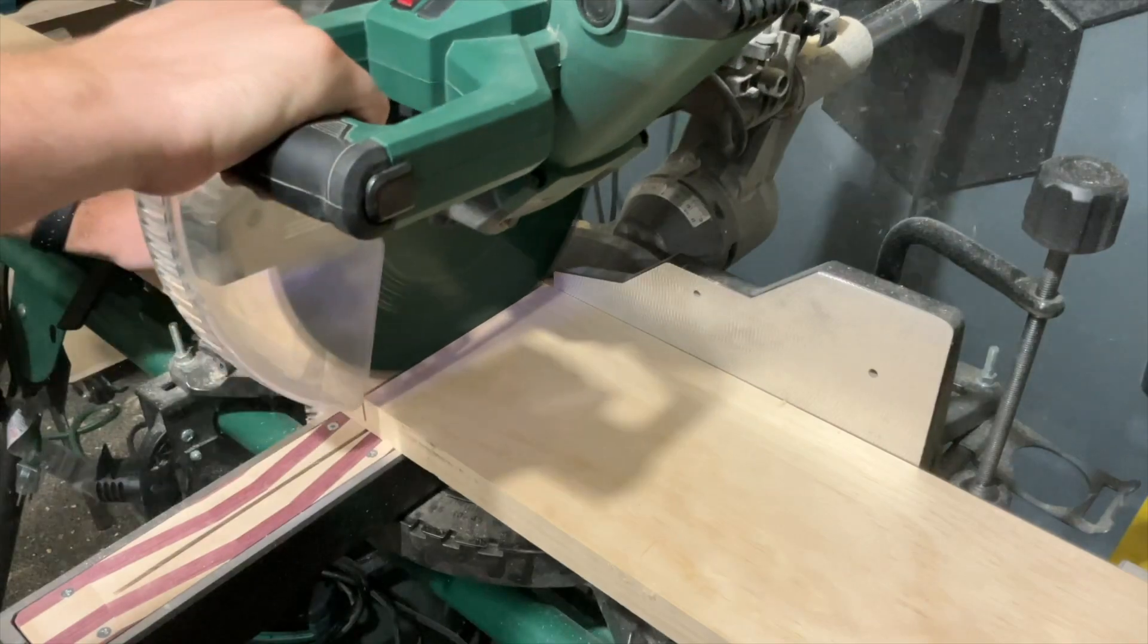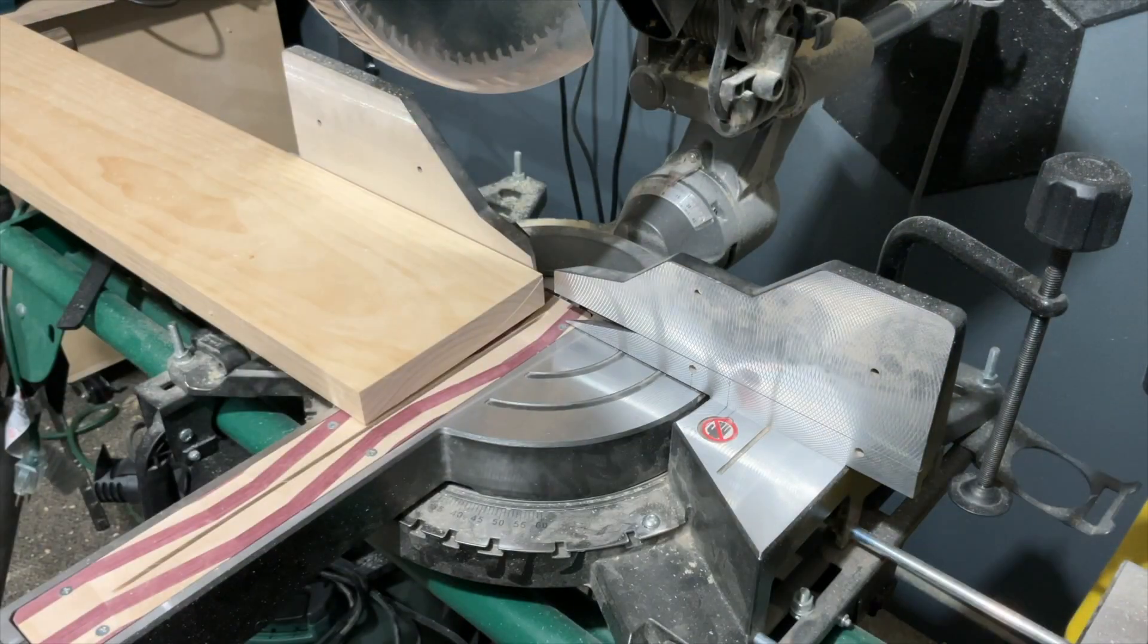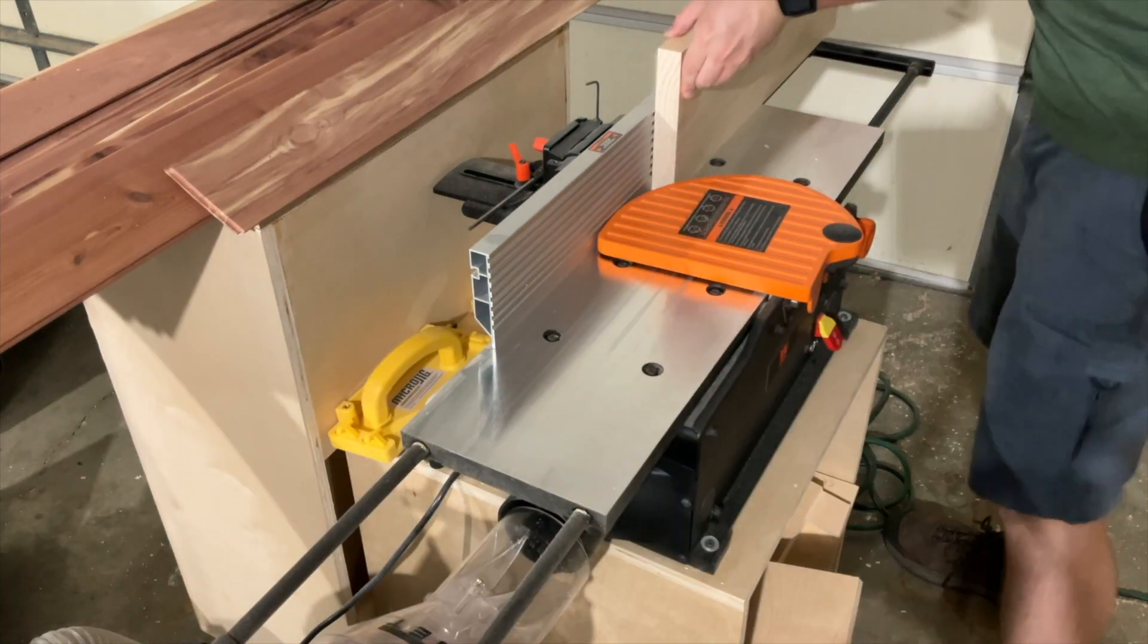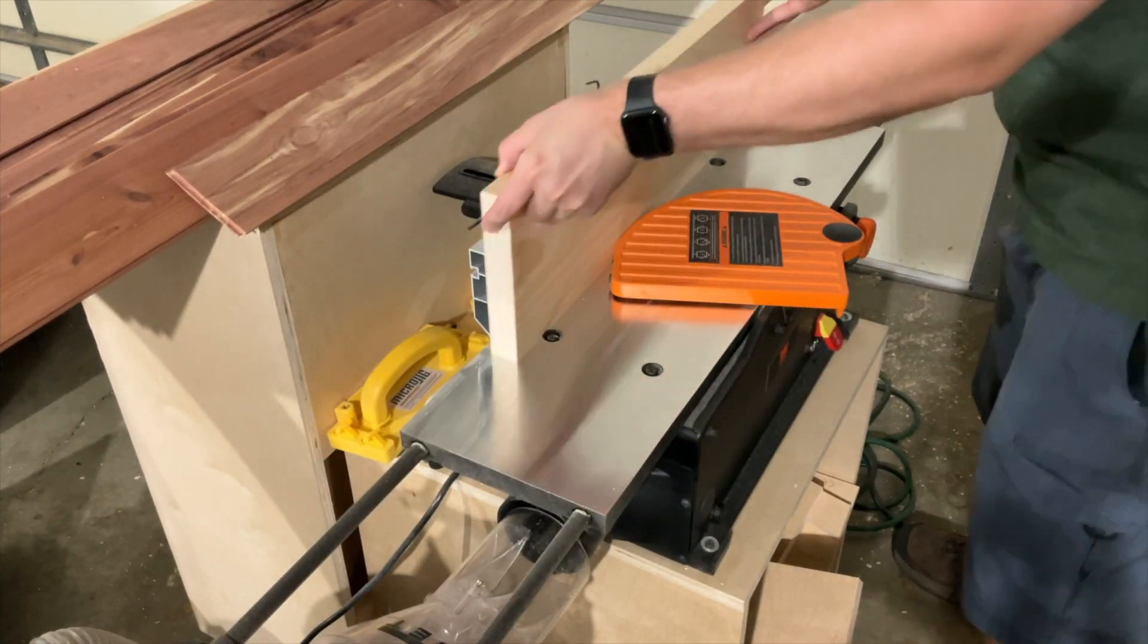Obviously you can use whatever material you want and if you want them to be stronger I would suggest something like maple, but this is ready to go surface four sides and relatively cheap.